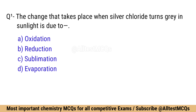Question number 1: The change that takes place when silver chloride turns gray in sunlight is due to? Correct option is B: Reduction.